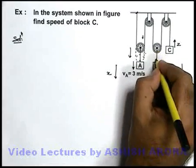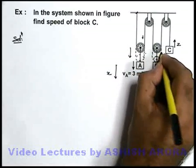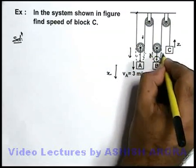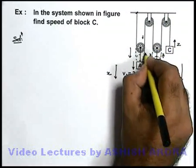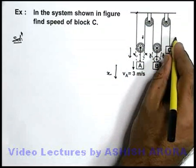Similarly, if this pulley will go down by a distance y due to the motion of block B, it will also pull the string on the two sides of pulley by a distance y and y, that will be 2y. And as C is going up, this whole extension in the string, that is 2x plus 2y, will be provided due to the motion of C.